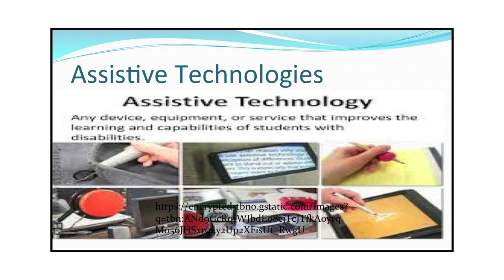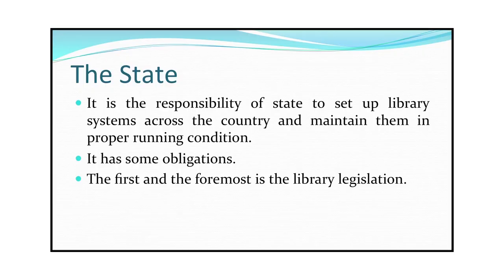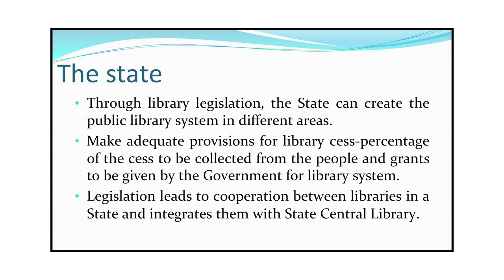Assistive technology is any device, equipment or service which improves the learning and capabilities of students with disabilities. The second law also has an implication on the state. It is the responsibility of the state to set up library systems across the country and maintain them in proper running conditions. The first and foremost obligation is library legislation. Through library legislation, the state can create the public library system in different areas. It can decide how libraries are to be run and maintained, make provisions for library taxes, decide upon the percentage of taxes to be collected and grants to be given by the government. Legislation leads to cooperation between libraries in a state and integrates them with the central library of the state.